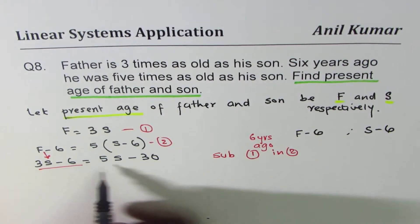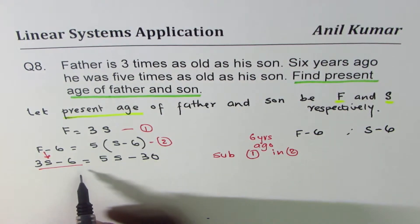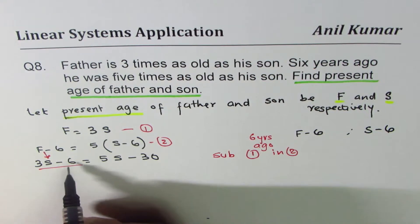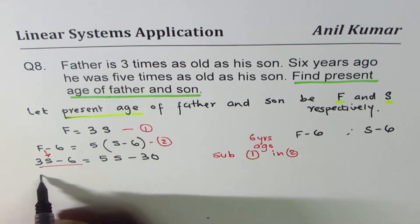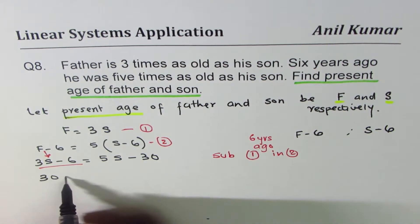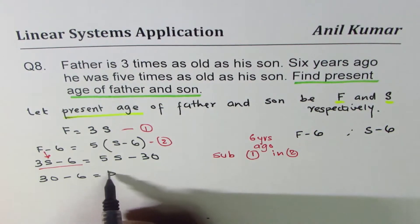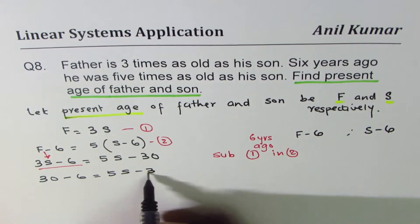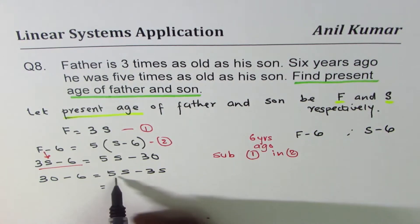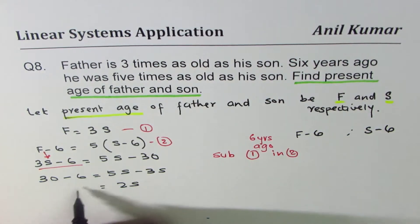Bring the variables together and constants together. So 30, if you take to the left side, minus 30 becomes plus 30, minus six. We have five S minus three S. Five minus three is two. And 30 minus six is 24. Now you can divide by two both sides.